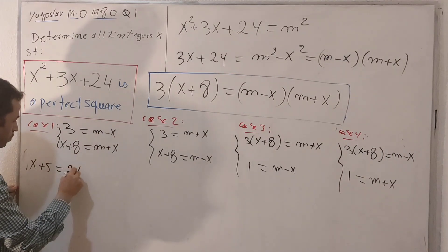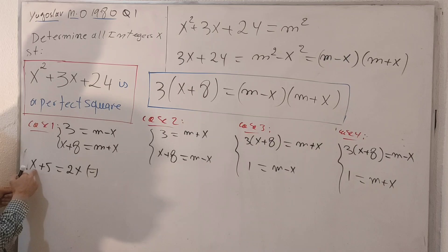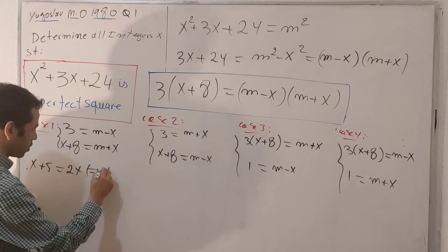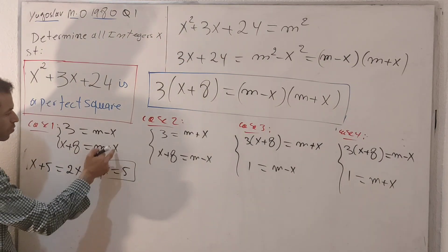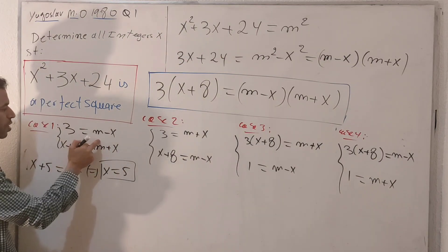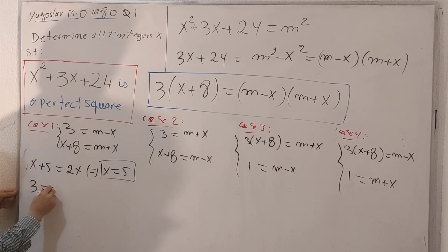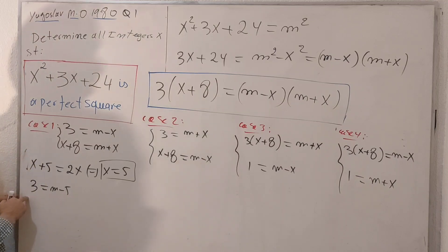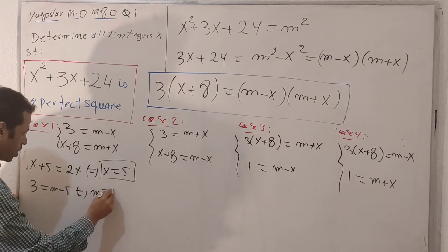Taking x to the right side, I get x = 5. Inserting this into the first equation: 3 = m minus 5, so taking 5 to the left side gives m = 8. So for case one: x = 5 and m = 8.